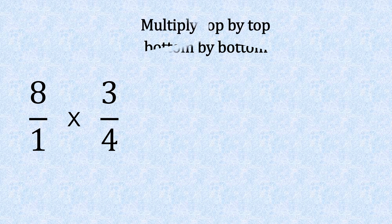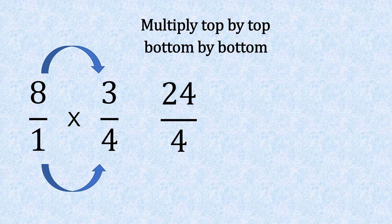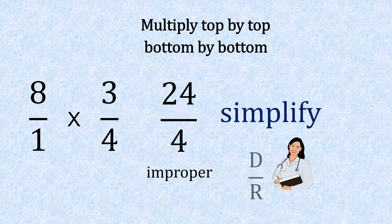So you might get a whole number—don't panic. What we need to do is rewrite this fraction as 8 over 1. Now we can begin, so KFC. Let's flip that fraction, giving us 3 over 4, and change that sign to multiply. Top by top, off we go: 8 times 3 is 24, and 1 times 4 is 4. Now we can see that's an improper fraction, so we need to call the doctor: D for divide, R for remain. 24 divided by 4 goes in 6 whole times with no remainder, so your answer is 6.